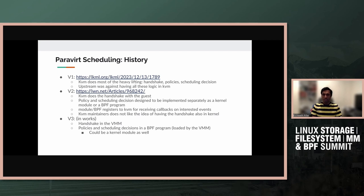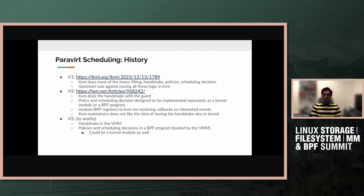We submitted a v1 soon after LPC where the implementation was very KVM-specific — KVM was the arbitrator for the handshake, housed the policies, and was the decision maker. Upstream didn't like this because these are things a hypervisor shouldn't be doing. So in v2, about a month later, we moved policy and scheduling decisions outside of KVM. That's where BPF comes in — implemented as either a BPF program or a kernel module, hooking into KVM using struct_ops so KVM can call back on events like VM enter or VM exit. However, the handshake was still inside KVM.